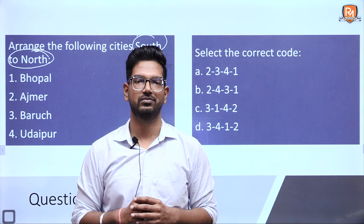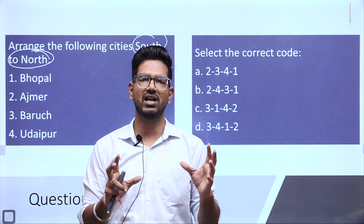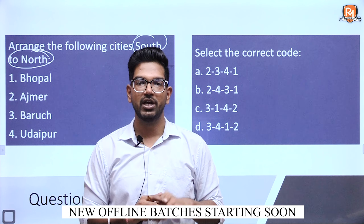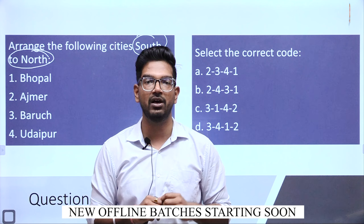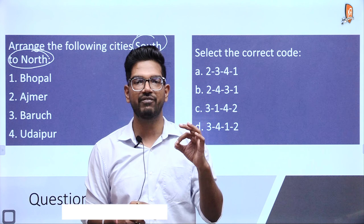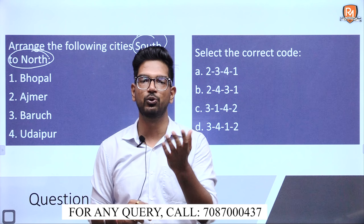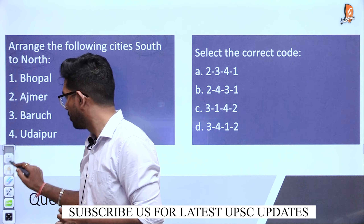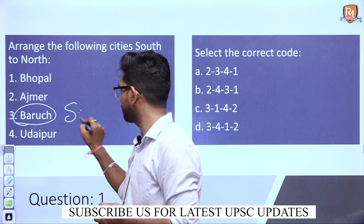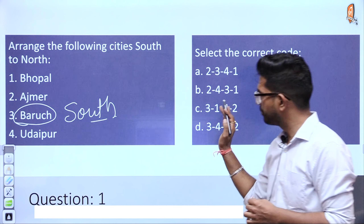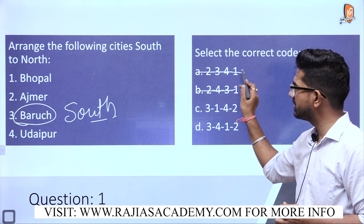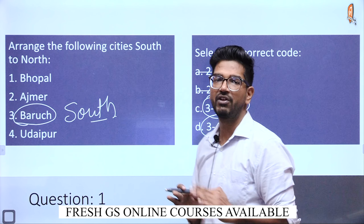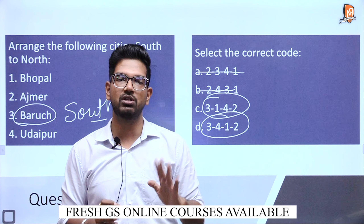Let us see the map work first. The most important city which we will be aiming at is Delhi, then Jaipur, then Kishangarh, Ajmer, Swai Madhupur, Kota, then Udaipur, Bhopal, Ujjain, Indore, Ahmedabad — although Ahmedabad is slightly north of Indore — and after that Vadodara, Baruch, and Surat. These are the cities given north to south and you have to learn their names in north-to-south order, south-to-north order, or east-to-west order, because UPSC has asked this kind of question and can ask in the future also.